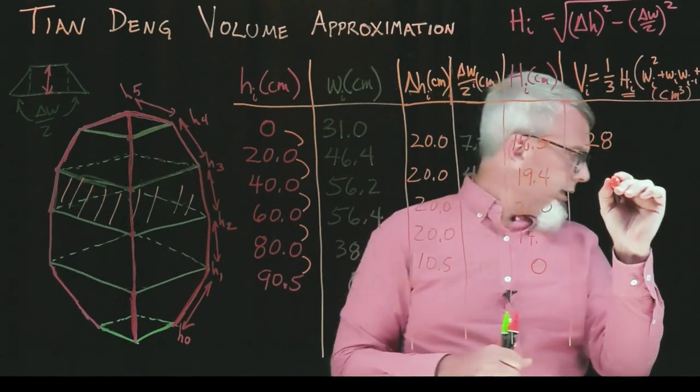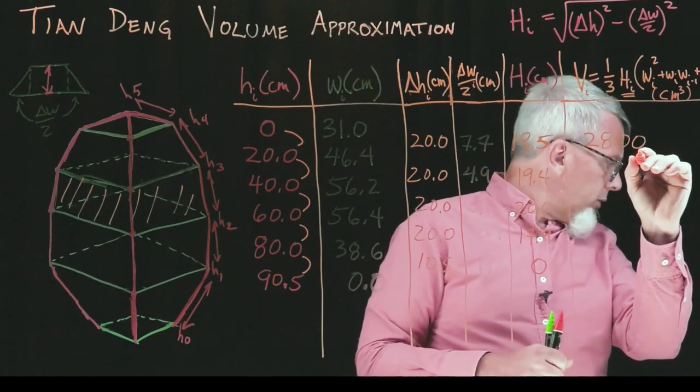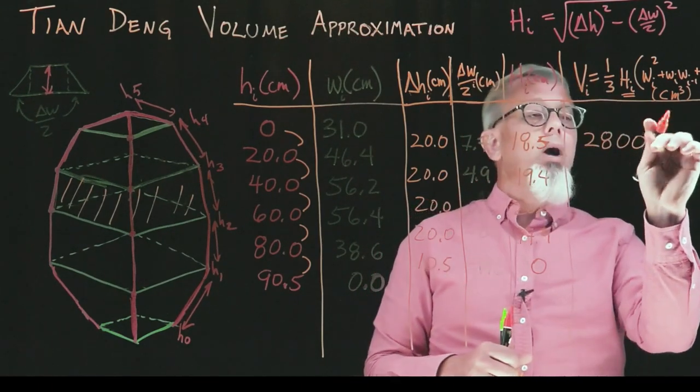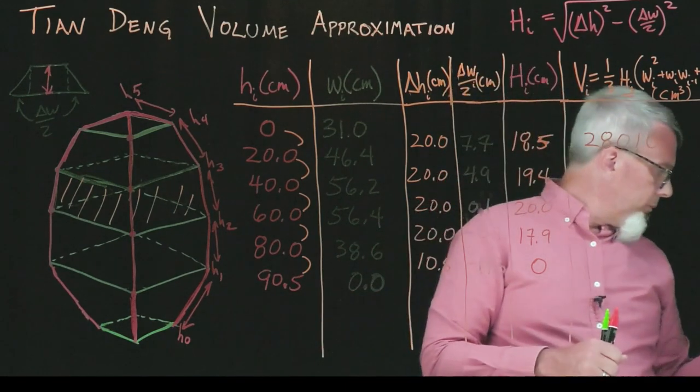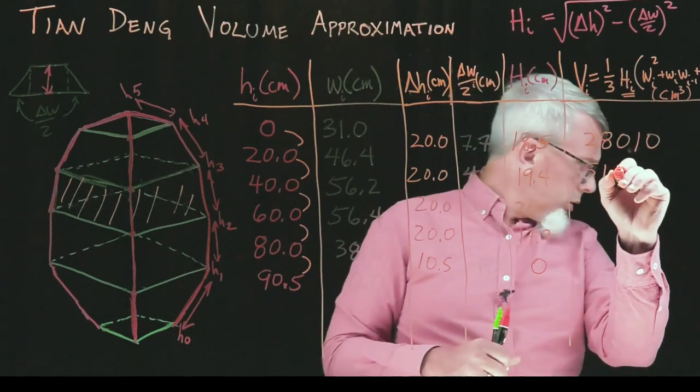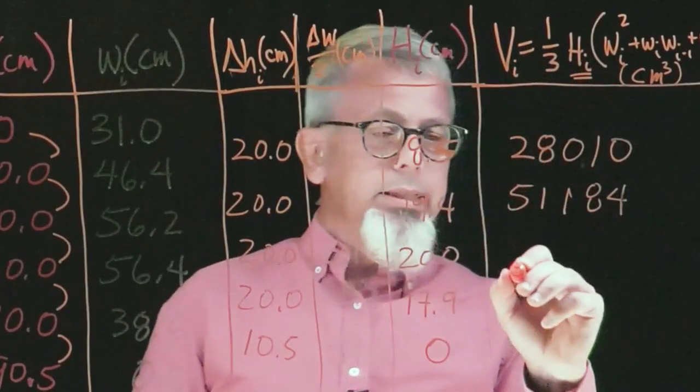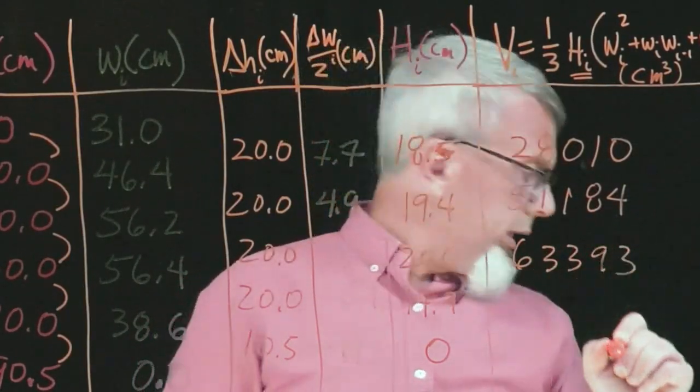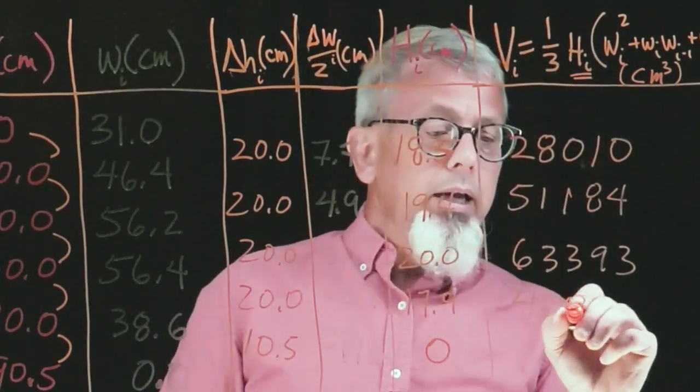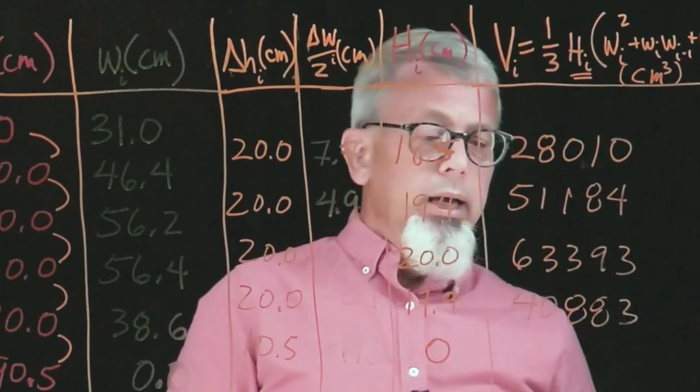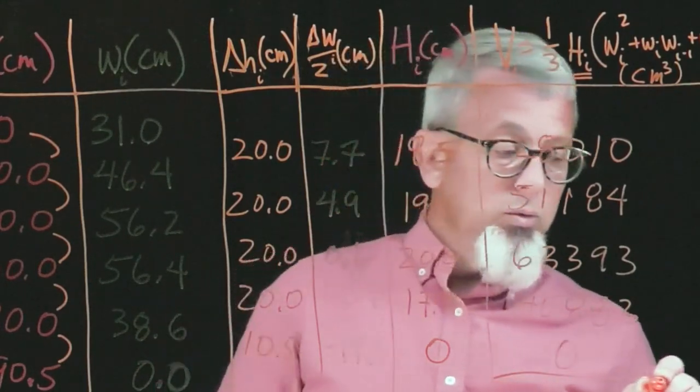The volume for this piece is 28,000. We'll go all the way down to the nearest cubic centimeter. Then I get 51,184, 63,393, 40,883. And then finally I get 0 because the height is 0. It doesn't matter what the other values are.